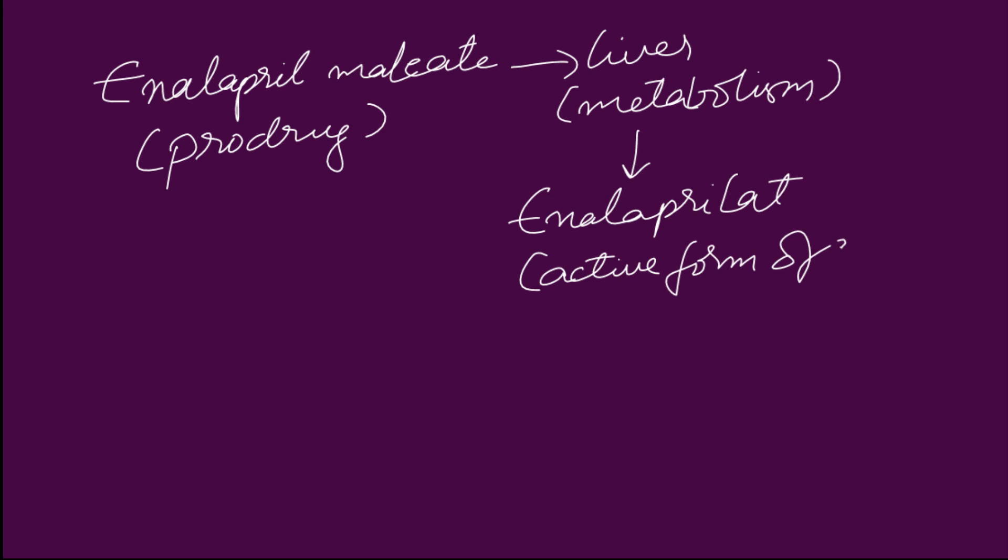Enalapril maleate is a prodrug converted to its active form in the liver, enalaprilat, which inhibits enzymatic proteolysis of angiotensin 1 to angiotensin 2. Apart from the normal mechanism of action, ramipril also decreases peripheral arterial resistance.